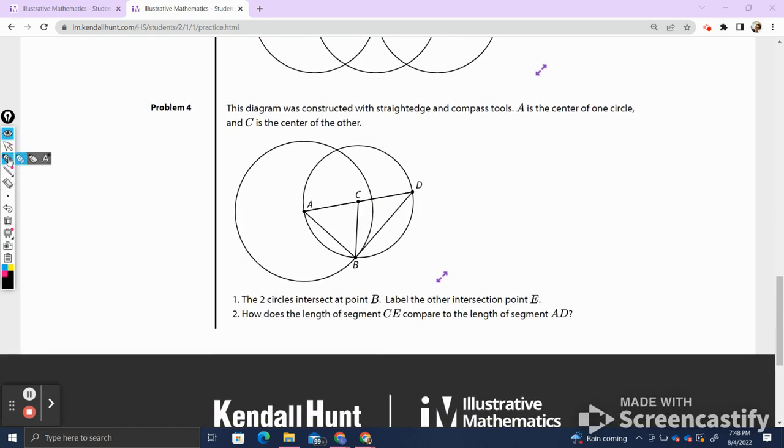Problem number four. We're almost done. The diagram was constructed with a straightedge and a compass tool. A is the center of one circle, so I see A is the center of the circle right here, and C is the center of another circle. Two circles intersect at point B, so I see how the edge of this circle intersects with the edge of that circle at point B. Label the other intersection point E. So I'm looking for where my circles intersect, which ends up right here. We're going to call it E.